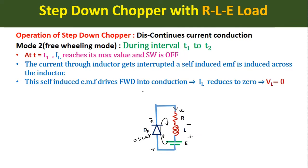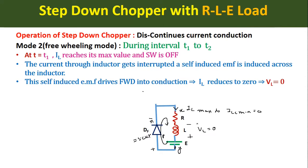Current again enters at terminal X and leaves at terminal Y through the load, represented by IL. Since the inductor is now imparting (dissipating) its stored energy, the load current decreases from IL maximum to IL minimum. In discontinuous current conduction mode, IL minimum equals zero, so the load current decreases from IL maximum to zero. The load voltage in this mode equals zero because the freewheeling diode is acting as a short circuit directly across the load, shorting it out.